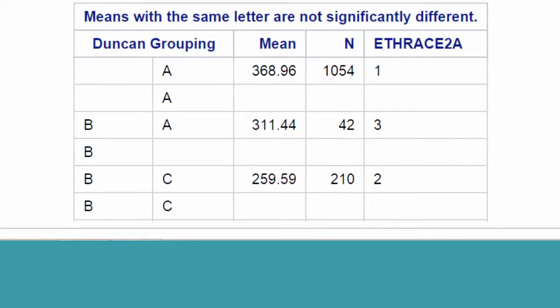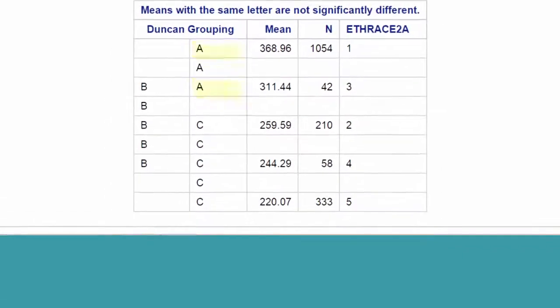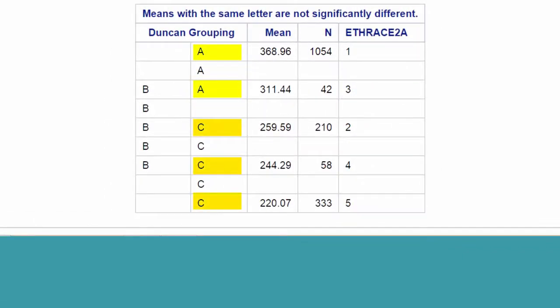Here's how the table should be interpreted. Basically, means with the same capital letter next to them are not significantly different. So you can see that ethnic groups 1 and 3 are not significantly different because they both have A's. Groups 2, 4, and 5 are not significantly different because each has a C. Groups 3, 2, and 4 are not significantly different from one another, each with a B next to the group number.